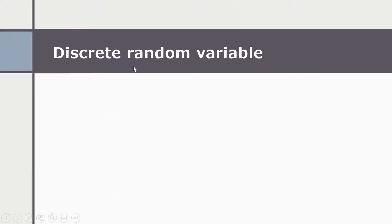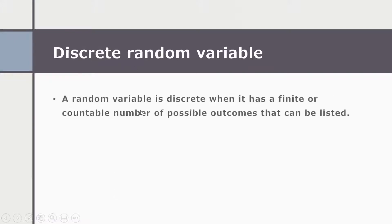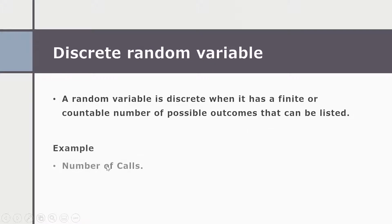A random variable is discrete when it has a finite or countable number of possible outcomes that can be listed. Examples are the number of calls and the number of students per class.